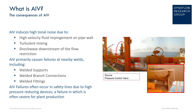The severity of AIV is a function of the pressure drop and gas mass flow rate passing through the flow restriction. Fatigue is commonly a problem at welded locations, and for that reason AIV primarily causes failure at nearby welds, including welded supports, branch connections, and other such fittings.